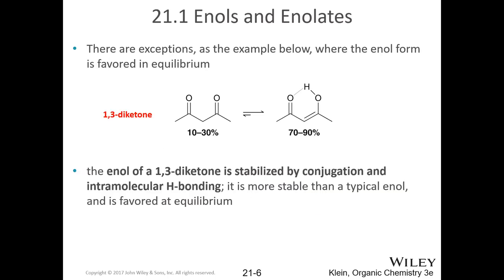There are exceptions where the enol is actually stabilized. For example, a four-atom conjugated system makes the enol favorable — a small hydrogen bond helps, but conjugation across the system is the big deal. We've done a couple of chapters on conjugation already; it's not going away and it's still important here.